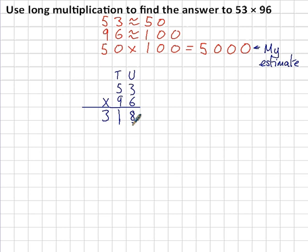Start the next line with a 0 because everything is going to be 10 times bigger. We're multiplying by 90, not 9. 3 times 9 is 27. 5 times 9 is 45, plus the 2 that I'm carrying is 47.